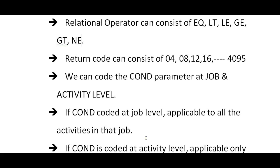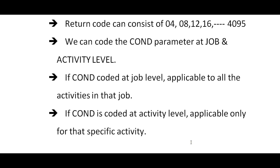If COND is coded at the job level, it is applicable to all the activities in that particular job. For example, if you have 10 steps in a job and you write a COND parameter at the job level, then it is applicable to all 10 steps or activities in that job. Based on requirements, you can choose to code the COND parameter either at the activity level or at the job level. If COND is coded at the activity level, it is applicable to only that particular activity or step.